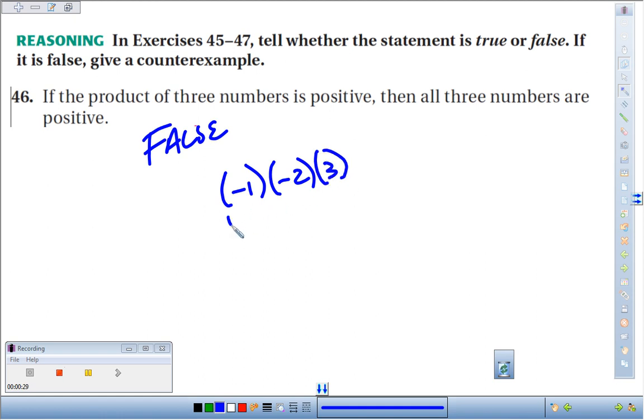Negative 1 times negative 2, a negative times a negative is a positive 2, times the 3 gives me 6. So the product of the three numbers is positive. Then all three numbers have to be positive? Nope, we just show that two of the numbers could have been negative.